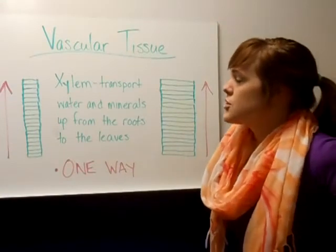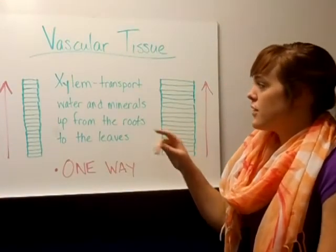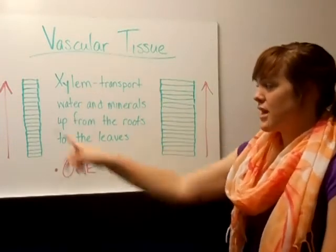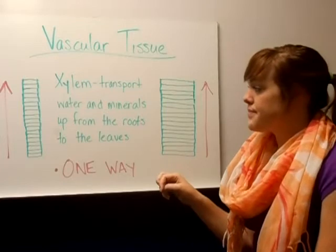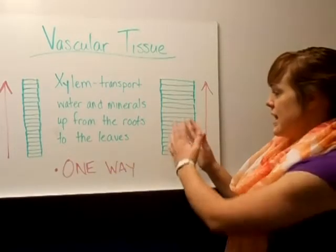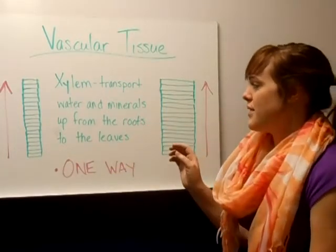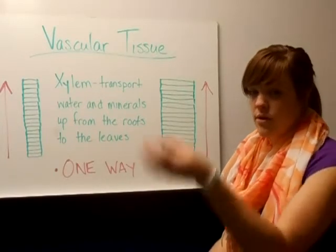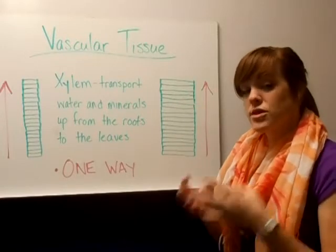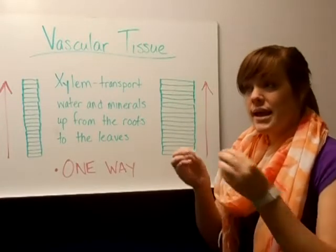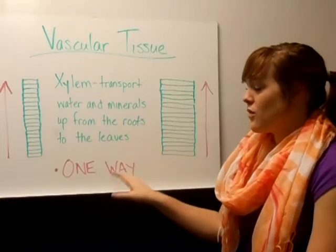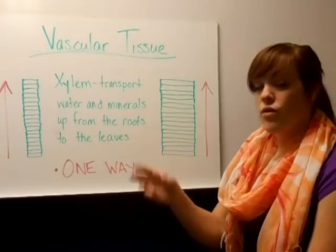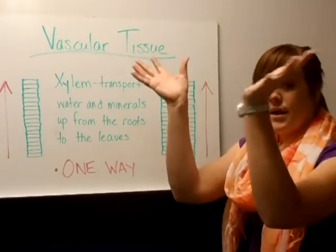There are two types of vascular tissue. The first one is called xylem. You will need to write this definition down in your notes. They can be skinny or wide, but they transport water and minerals up from the roots to the leaves. So they draw the water and minerals that the roots are absorbing for the plant and take them where they need to go. This is only a one-way transportation route — xylem do not let anything go back down. They only pull water up and out.